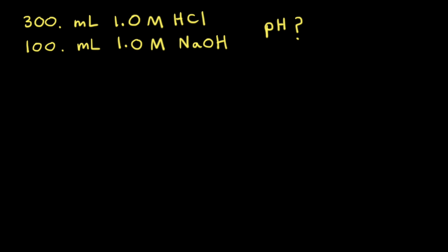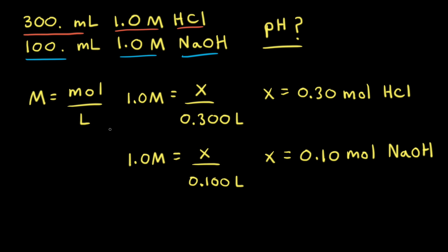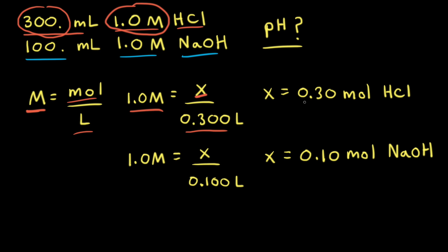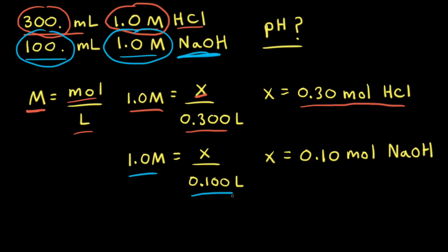Let's do another strong acid-strong base calculation, but this time the moles of strong acid and strong base are not equal. We react 300 mL of a 1.0 M solution of HCl with 100 mL of a 1.0 M solution of NaOH, and our goal is to calculate the pH of the resulting solution. The first step is to calculate moles of each. Using molarity = moles/liters: for HCl, 1.0 M × 0.300 L = 0.30 moles of HCl. For NaOH, 1.0 M × 0.100 L = 0.10 moles of NaOH.